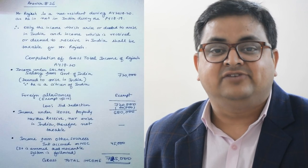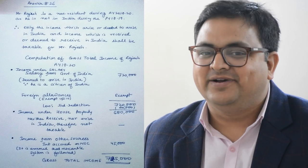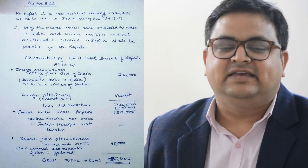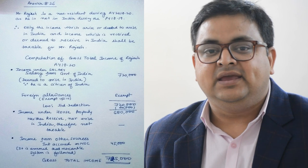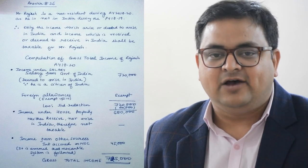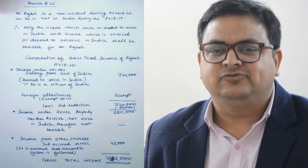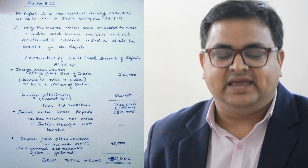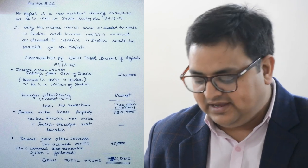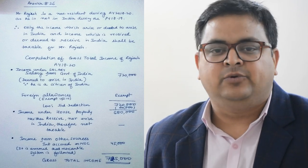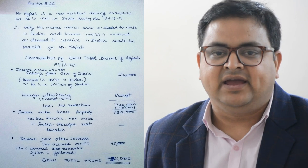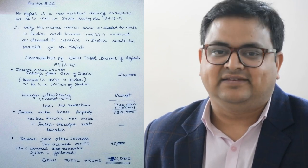This way his income will be taxable. Salary income aayi 7,20,000, minus standard deduction - Section 16 mein standard deduction aayi ki 40,000 - toh inki income ban jaayegi 6,80,000. House property ki income nahi hai, aur IFOS ki income hai 45,000. In this way you can calculate his GTI. This was question number 26.